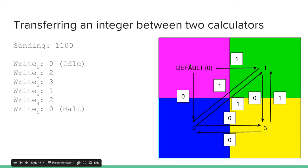Then we're going to go back to the default, which means halt. So we wrote 0, 2, 3, 1, 2, 0, and that corresponds to 0, 0, 1, 1.